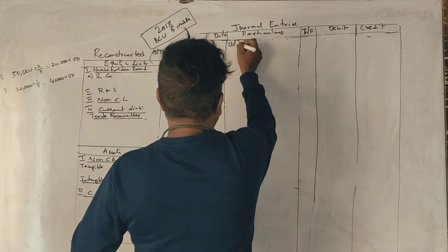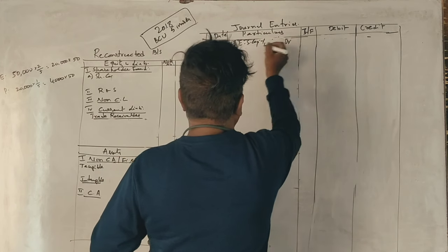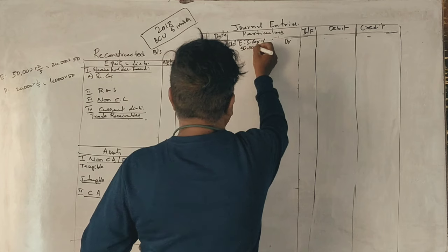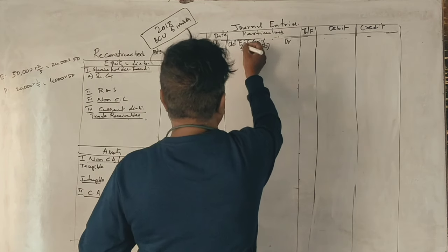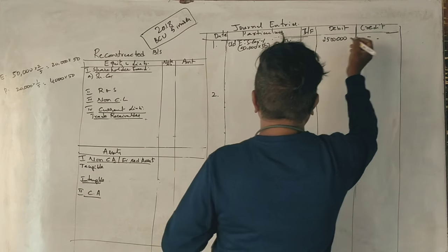Old equity share capital account debit. 50,000 into 50 rupees. 25,000? Yes, sir. 25,000.